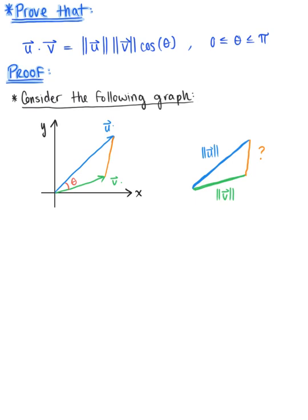But what is the missing side length? To determine that, let's go back to the xy-plane and create a parallelogram. By the parallelogram rule, from the terminal point of vector v we have a vector parallel to vector u but pointing in the opposite direction. So the missing side length is related to the vector v minus u, and the missing side length is the magnitude of vector v minus vector u. This angle is our theta.